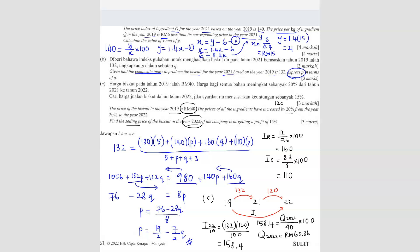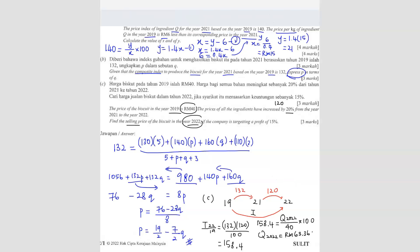If we want to find the selling price, the profit is 15%, so the selling price has to be 15% higher than the cost price. The selling price equals the cost price RM63.36 multiplied by 115 over 100, because we want to increase by 15%. So the selling price is RM72.86.